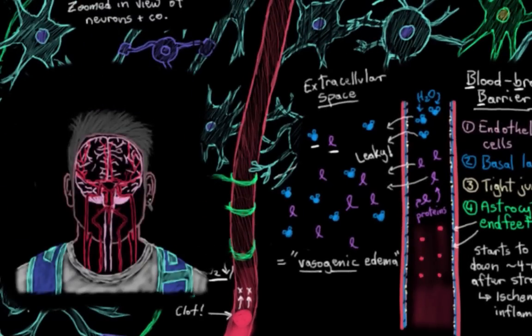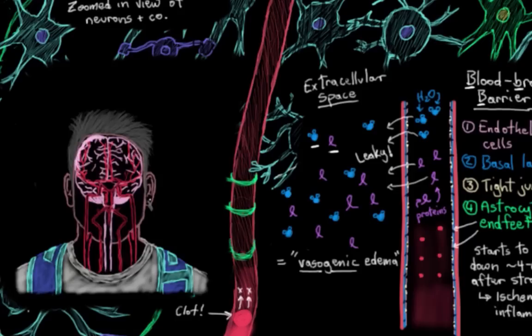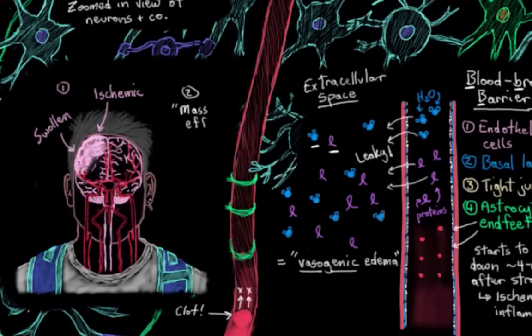And why is this important? Well, for one, swollen ischemic brain can't really carry out too many of its functions. So we want to minimize the time spent swollen as much as possible. And for two, it can result in a mass effect, which is where the swollen brain area starts to push on or displace surrounding brain tissue.